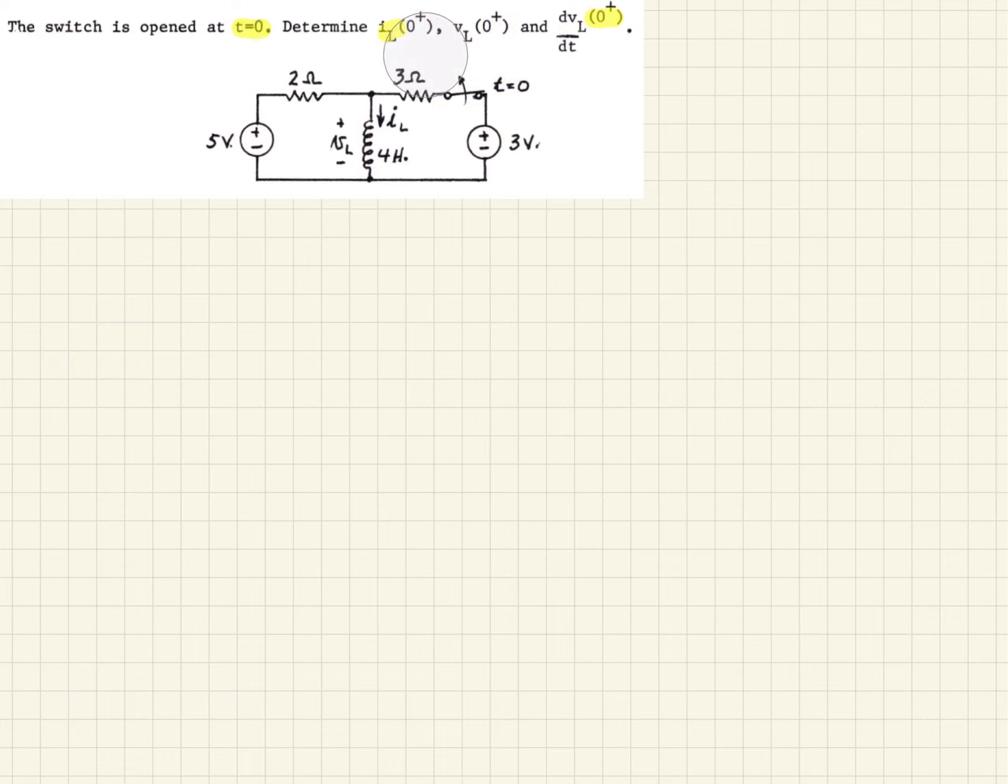So we need to recall that when we're in steady state, the inductor will look like a short circuit as far as the circuit is concerned. And so that being the case, we would expect to see current flowing from this source like so, and current flowing from this source like so, both to the short circuit. That should give us our value for IL.